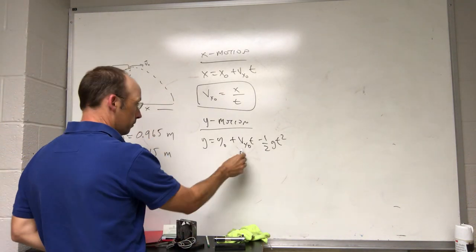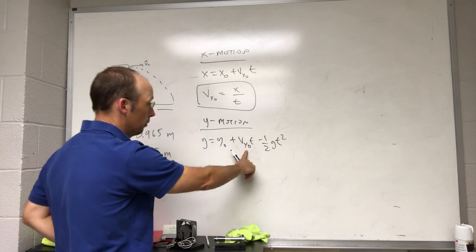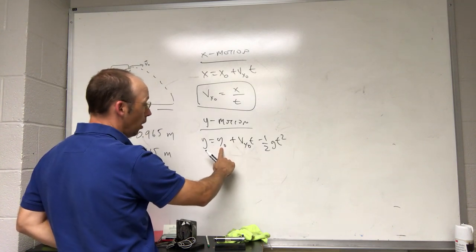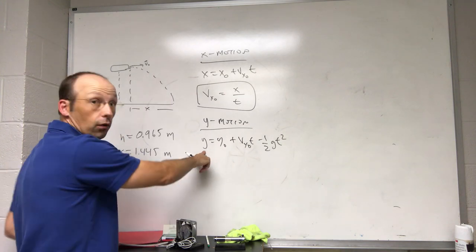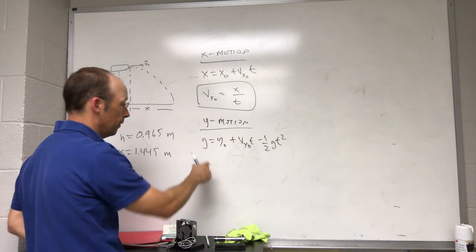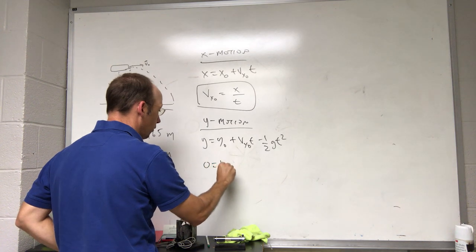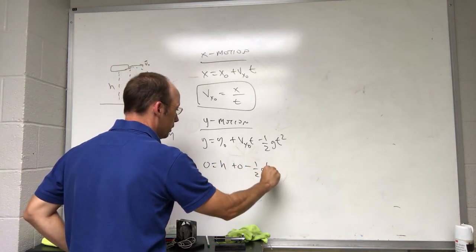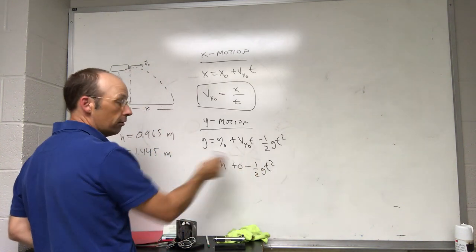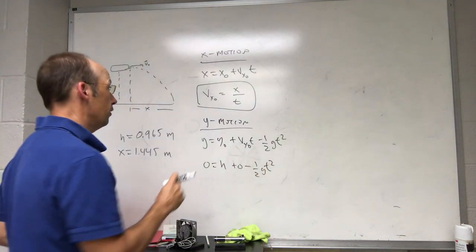Now, this term, the initial velocity is 0. And the initial height, the initial y value is h, what I measured. And the final y value is 0 because it lands on the ground. So, I get 0 equals h plus 0 minus 1 half g t squared. So, now I can use this to solve for t and use that t up here.